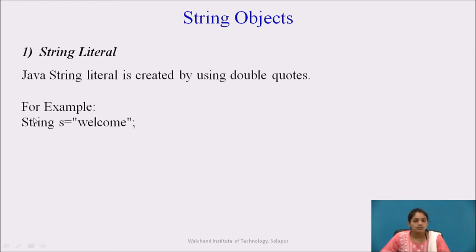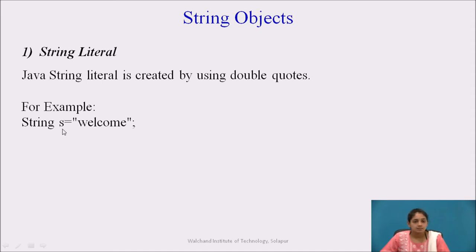For example, String is the data type, s is the string object we are going to create, and we assign it the value in double quotes: welcome. So the string welcome is stored in the string object whose variable name is s.